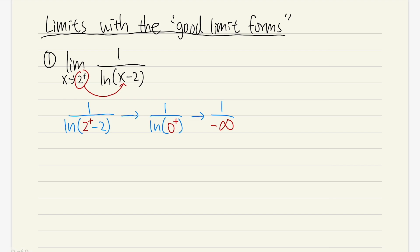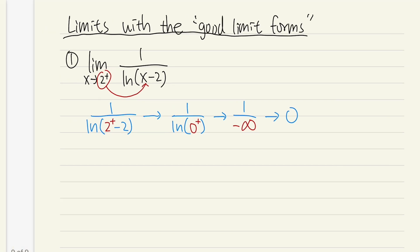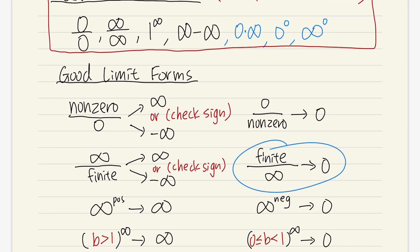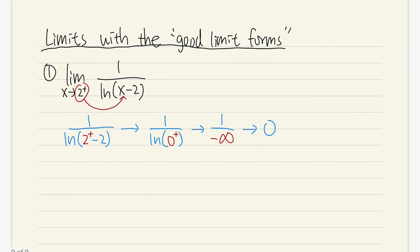Now we have 1 over negative infinity. It will give us 0, because a finite number over infinity is 0. It's negative, but negative 0 is still 0. Finite number divided by infinity is going to be 0. That's a good limit form right here. So finally, this is equal to 0.